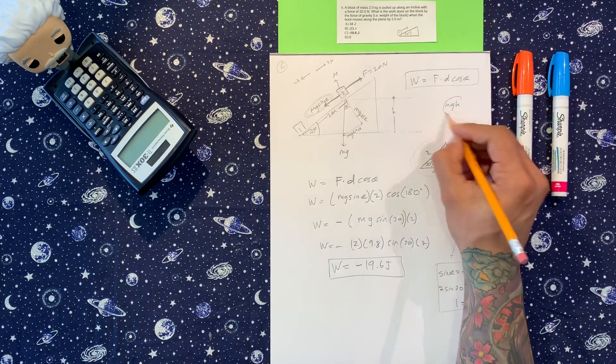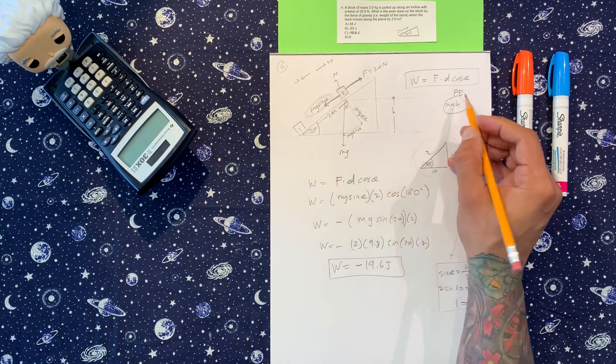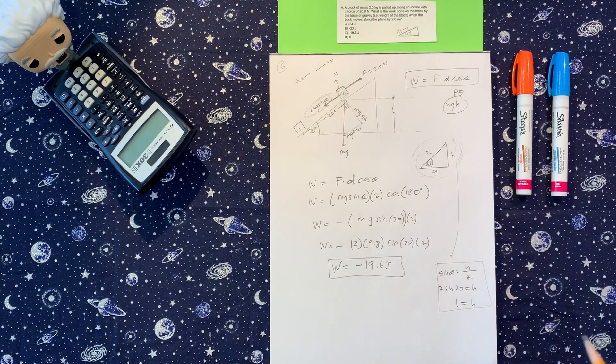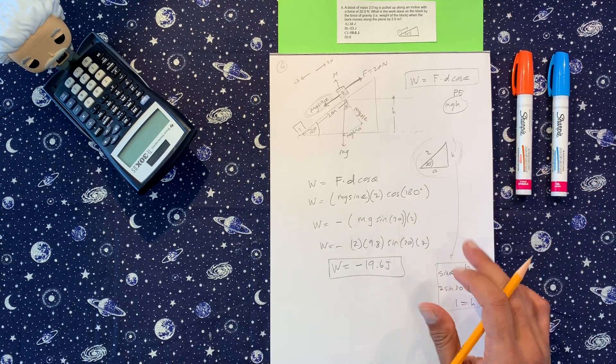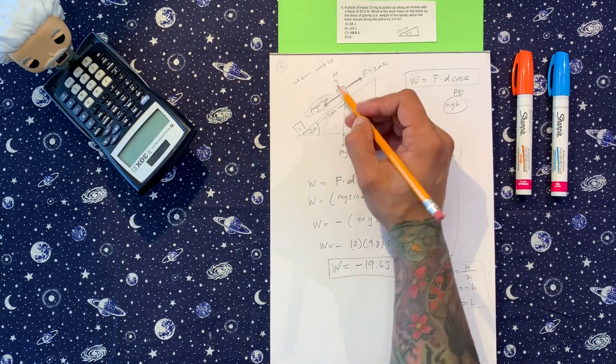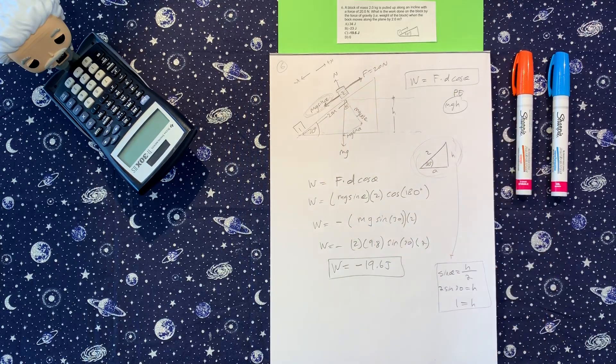So just in case they ask you for potential energy at the top, then you know how to calculate the height. So separate problem, but I think it was related to this one. So we have negative 19.6 joules of work done by the force of gravity. All right.